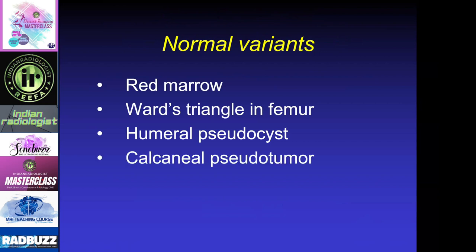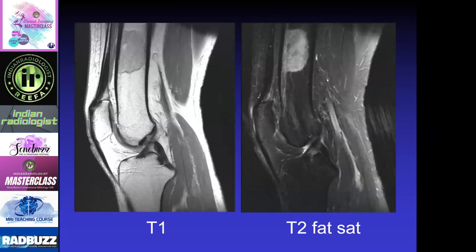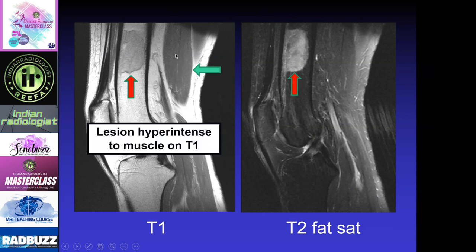Normal variants are lesions that can be normal but look unusual on imaging and make us think there's a bone tumor when there really isn't. Here's a lesion in the distal femur that looks really suspicious — it's very well circumscribed and bright on the T2 fat sat image. The main thing is you want to compare this to skeletal muscle, and we can see that this is brighter than skeletal muscle, so it has to contain fat.